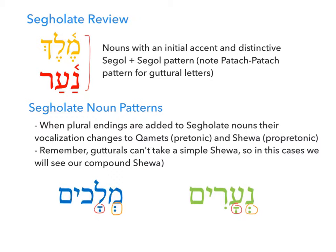One caveat: if we have a guttural in the first position — like in the word eretz — we can't take a regular sheva; we need our compound sheva. So that will show up differently if we have a guttural letter. A word like eretz becomes aratzot, for example. Between those two patterns and this segolate noun pattern, that covers most of our bases. Know the vocab, know the endings, and be aware of some changes you can expect earlier in the syllables for an inflected noun.